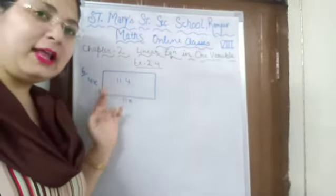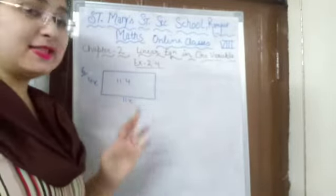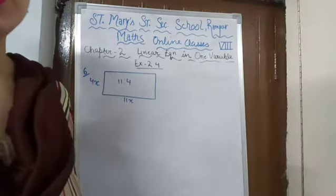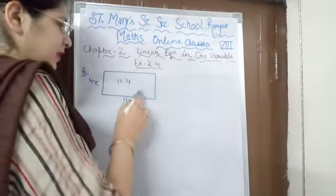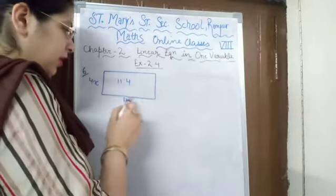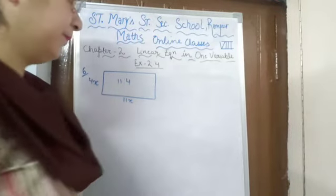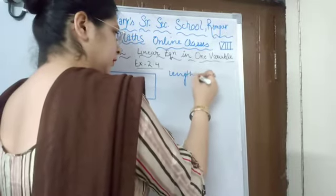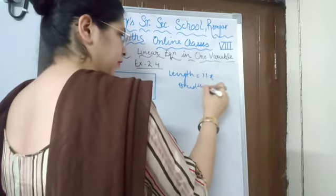So obviously length will be greater and breadth will be shorter. The exact values of length and breadth are not given — they are given as a ratio. So whenever a ratio is given, we will take 11X and 4X, multiplying the ratio with X. So 11X is the length and 4X is the breadth.